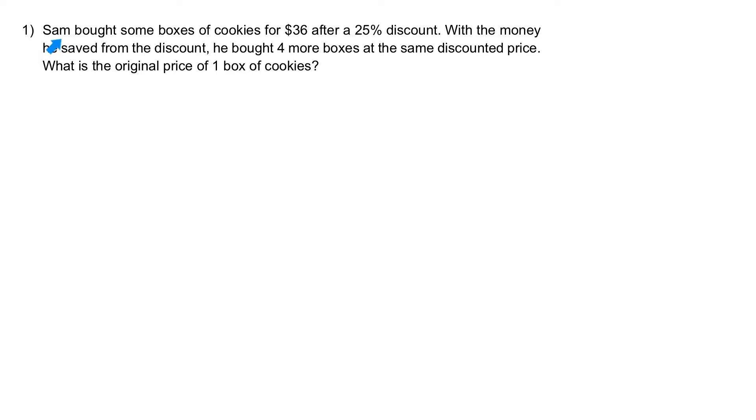Question 1. Sam bought some boxes of cookies for $36 after a 25% discount. With the money he saved from the discount, he bought four more boxes at the same discounted price. What is the original price of one box of cookies?